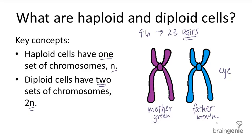Hence, humans are said to have 23 pairs and not 46 separate chromosomes. A haploid cell is different — it only has one set of chromosomes, so there's only one chromosome for each chromosome type. In humans, the only haploid cells are sperm and egg cells, and each of them has its own separate set of 23 chromosomes.